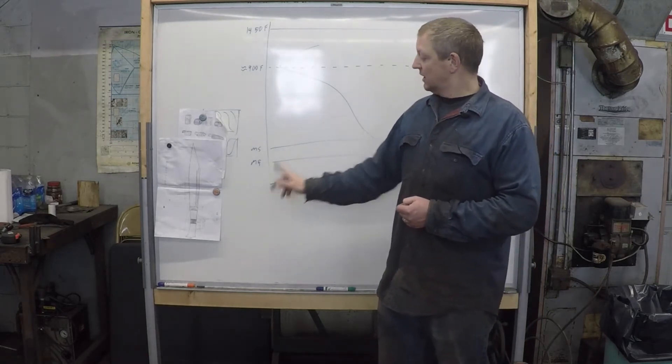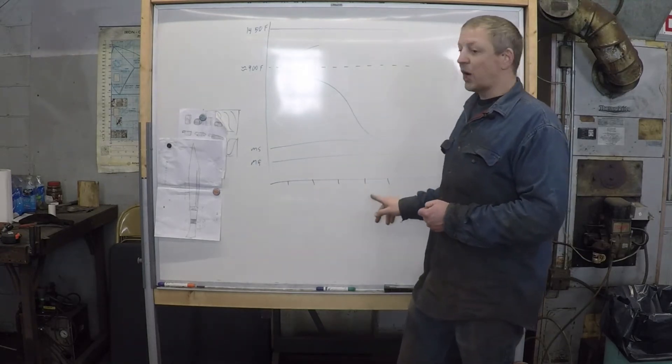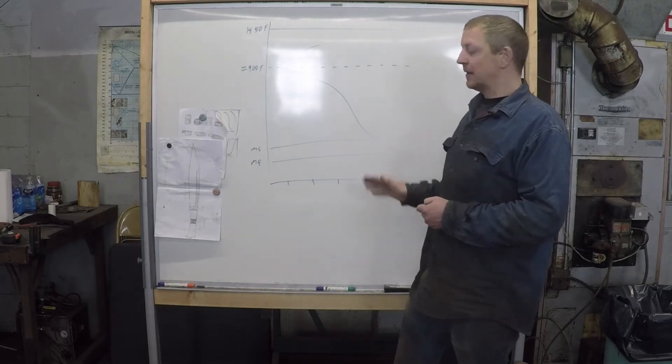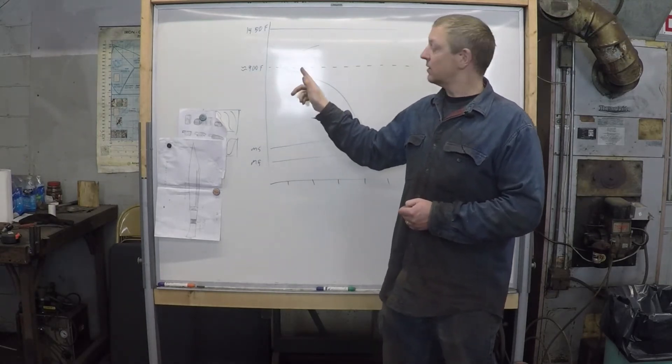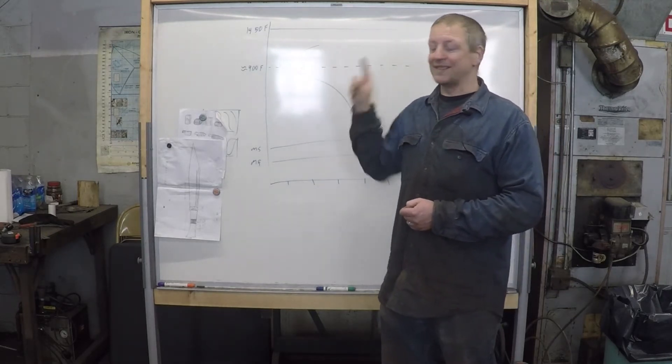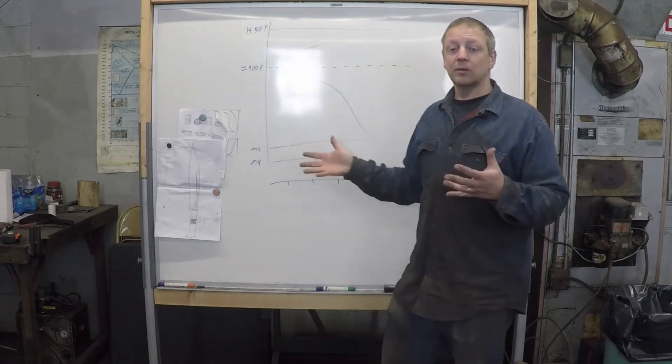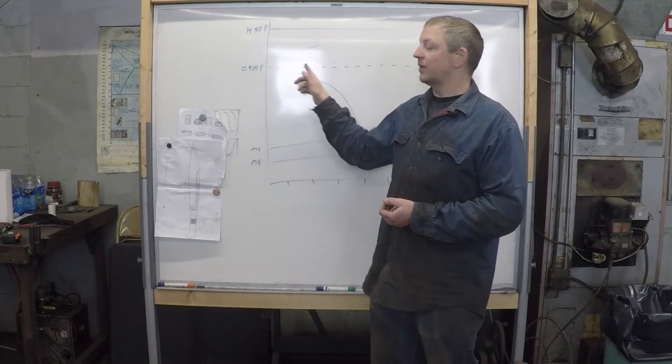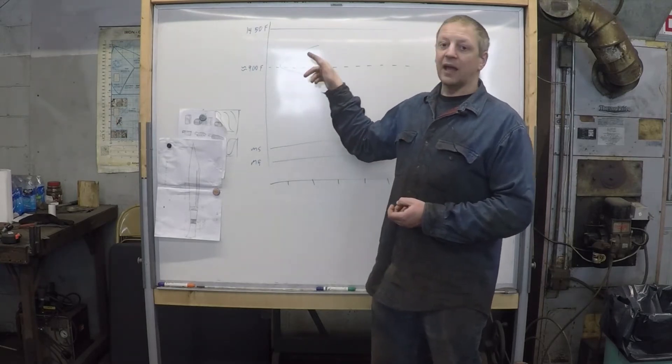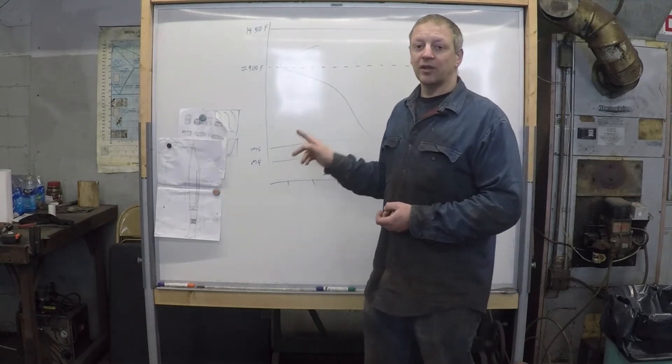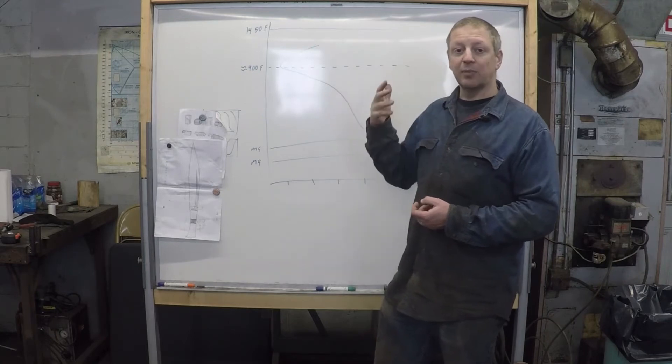So at the bottom here, we have time. By the way, you should always be aware that on almost all of these diagrams, time is a logarithmic scale. So you may have one second, ten seconds, a hundred seconds, a thousand seconds. Then you get into hours and hundreds of hours. It's a very compressed view. This little section here, things happen fast. As you get further out, takes forever. Also note, the scale is not going to be the same for all alloys.